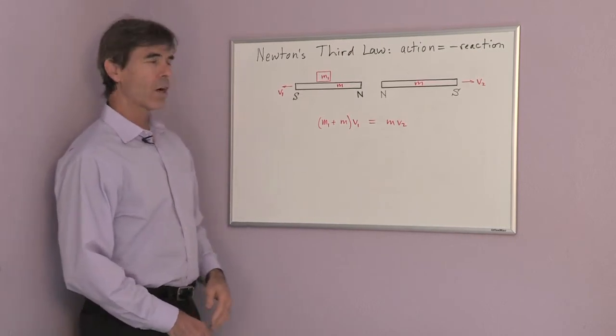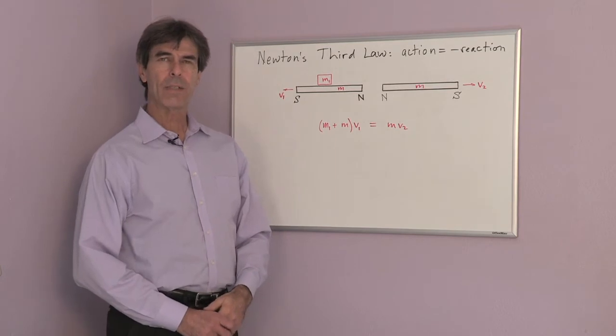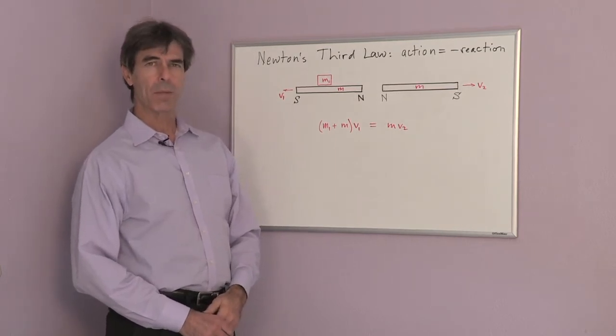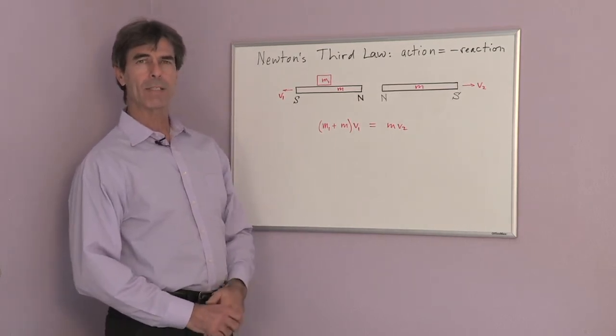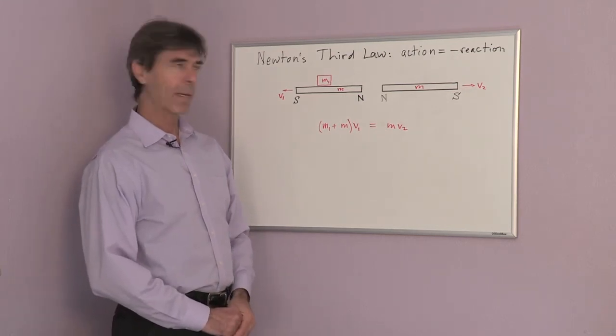what we would need are two bar magnets and we need to reduce the friction as much as possible. Maybe putting bar magnets on an oily surface, an oily metal surface.